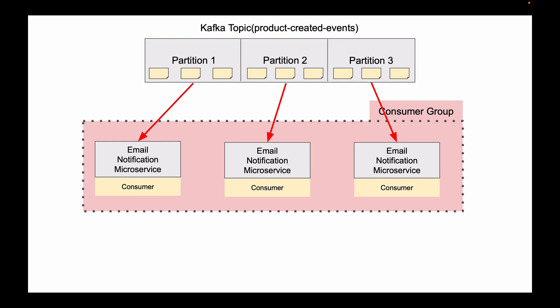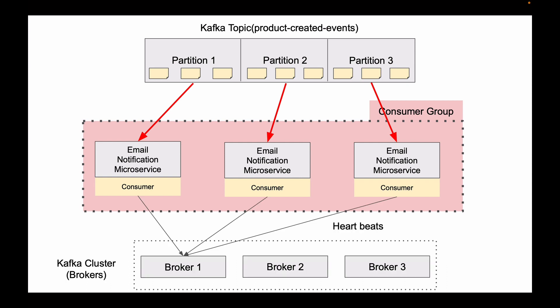When you start a new Kafka consumer application and it joins a consumer group, it starts sending signals to one of the brokers that is selected as group coordinator. These signals are called heartbeats, and they are sent at regular time intervals. This interval can be configured, but the default value is three seconds. While your Kafka consumer microservices are running, each of them will be sending heartbeat signals to the Kafka broker, letting it know that it is running and can consume new messages.